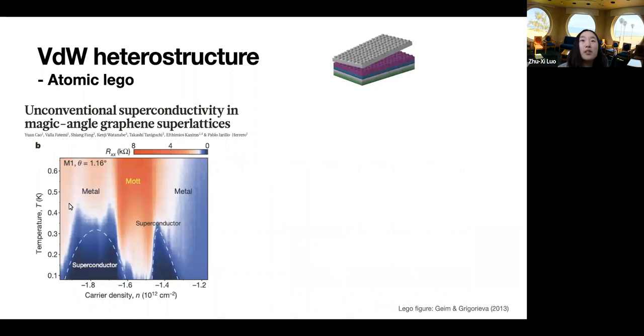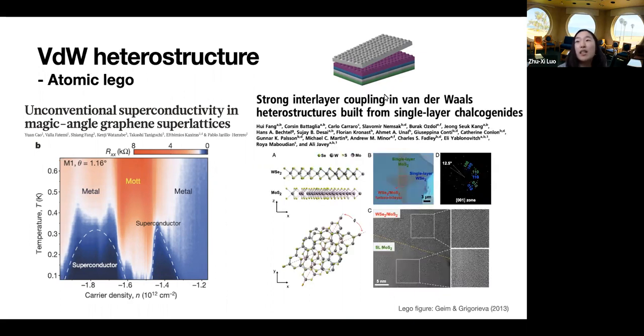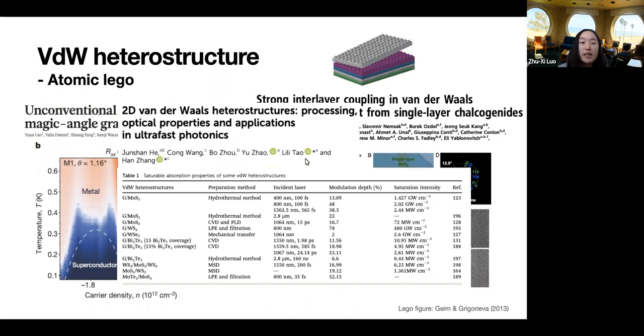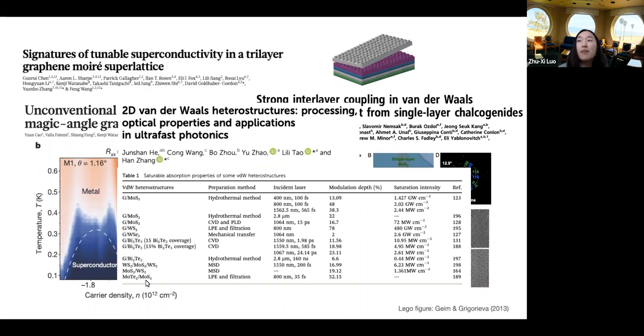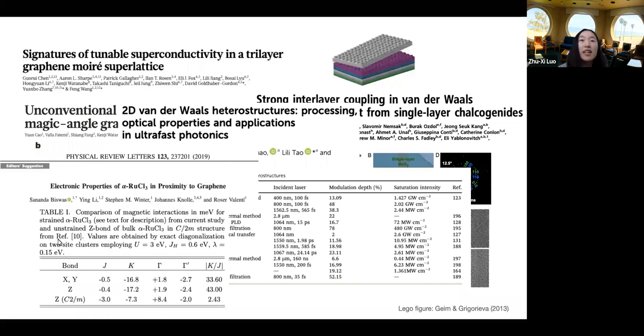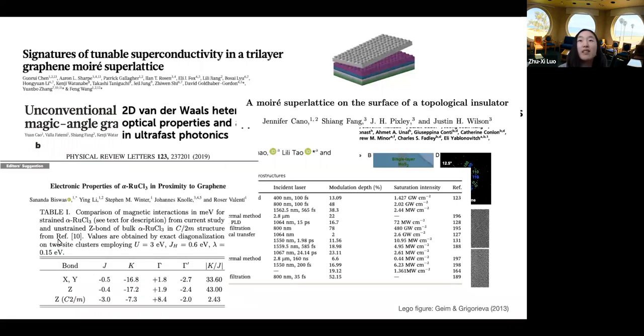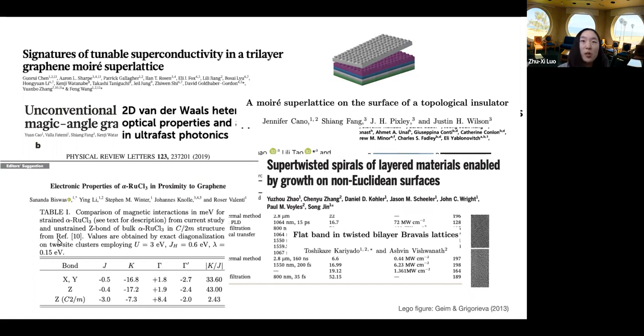So soon after the twisted bilayer graphene, both experimentalists and theorists began exploring the possibilities of stacking everything on everything, like an atomic Lego. For example, there's twisted bilayer transition metal dichalcogenides, graphene stacks with everything else, trilayer graphene, topological insulator candidates stacked with graphene, stack of surface states in three-dimensional topological insulators, stacking materials on different lattices, and even growing heterostructures on non-flat surfaces. But mostly people have studied only electronic properties of such heterostructures.